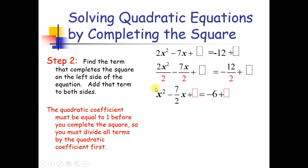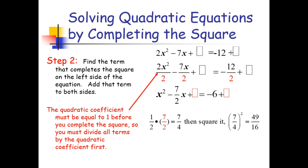We now have the equation with spaces. To complete the square, we get half of b: one half times 7 over 2 equals 7 over 4. Then we square 7 over 4 to get 49 over 16. So the value 49 over 16 is placed in our spaces on each side of the equation.